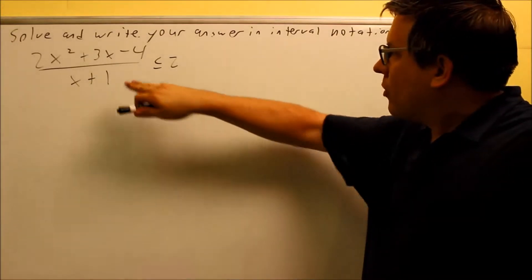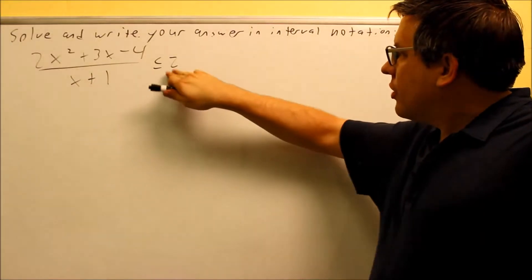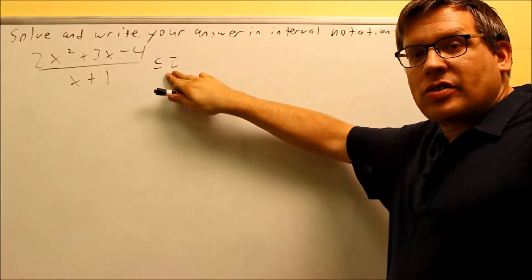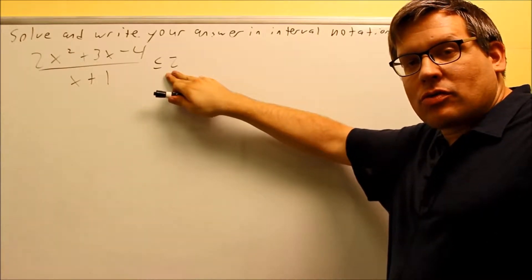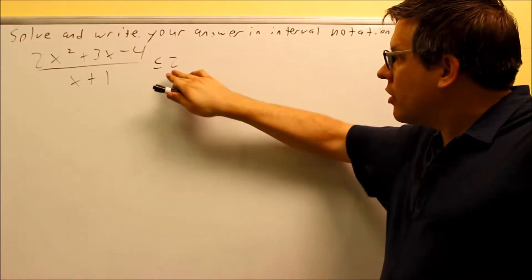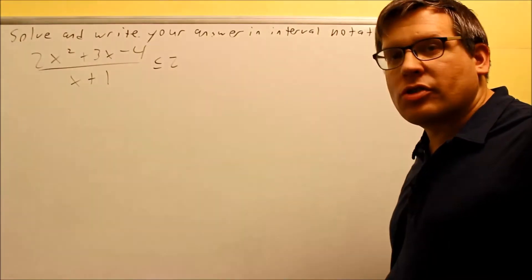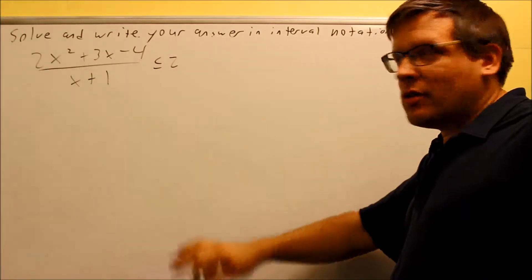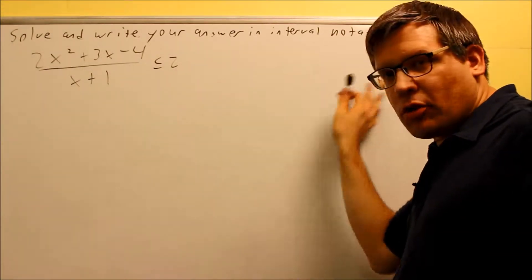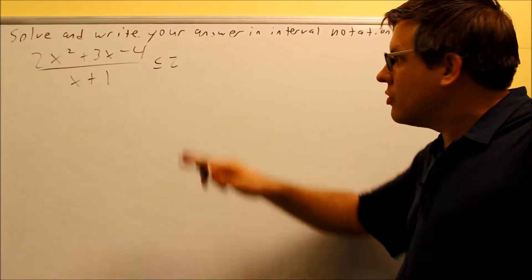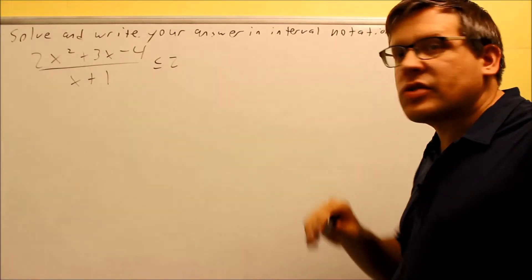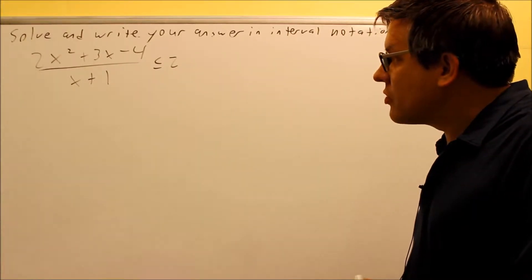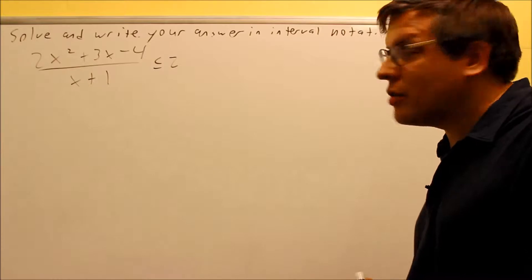For this problem we have one more — a fraction — and again the number after the inequality is not a zero. So when you do this kind of process, you want to make sure you have a zero there first. Before we do any kind of method — table method, number line method — it doesn't matter which one you want to use, you want to make sure you always have a zero there first. So that's going to be our first step: subtract it and get a zero there.